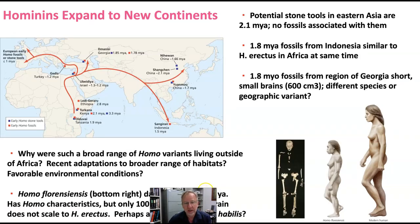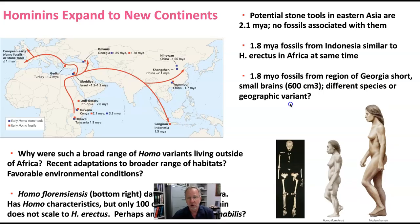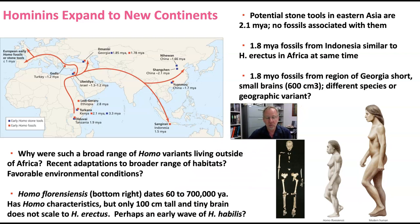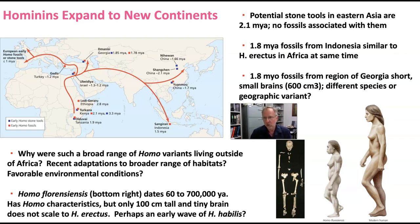Something we do not see in australopithecines, but we do see in our own genus Homo, is that as Homo we expanded out of Africa and migrated to new continents — moved into Europe, moved into Asia, and of course our own species eventually made it into North America, Australia, and South America. There are potential stone tools found in Eastern Asia about 2.1 million years ago, shown in the figure on the left-hand side of the slide.